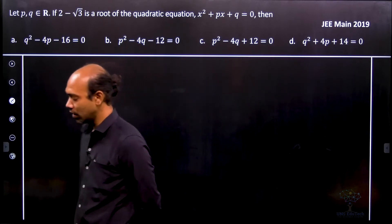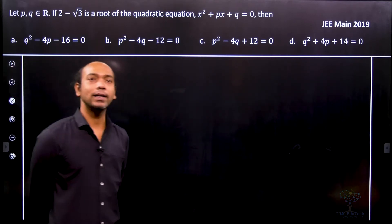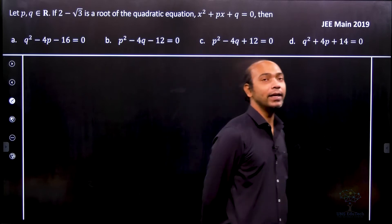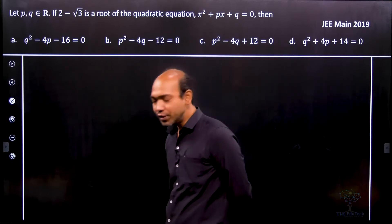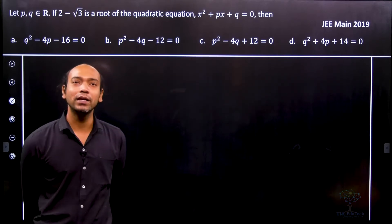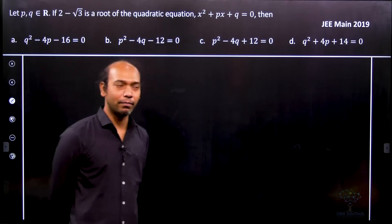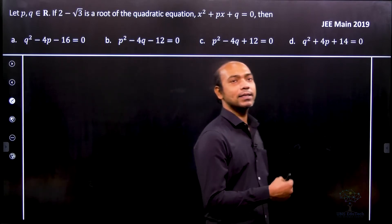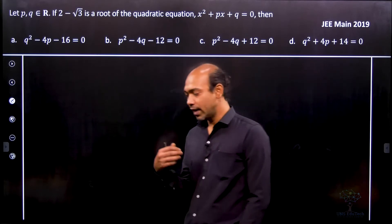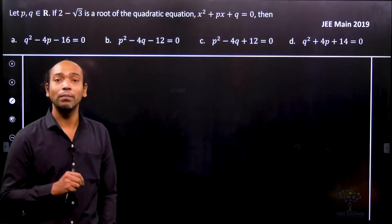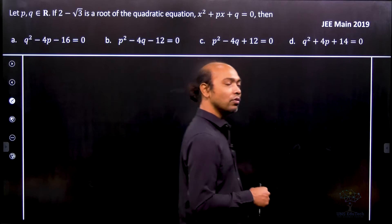So let's see here. We say that 2 minus root 3 is a root of this quadratic equation, where the coefficient of that quadratic equation p, q and obviously 1 are real numbers. So we know that if a minus ib is a root of quadratic equation as a complex number, then a plus ib, the conjugate, will be that.